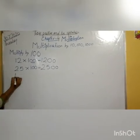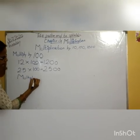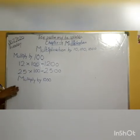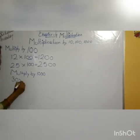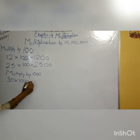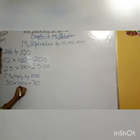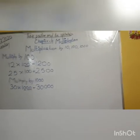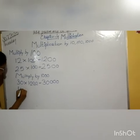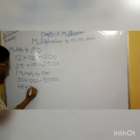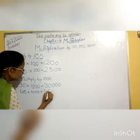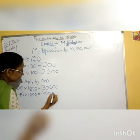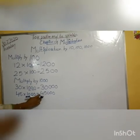Same in the case of multiply by 1000. If we multiply any digit by 1000, write the digit and put these three zeros to the extreme right of the number. For example, 30 multiplied by 1000 is 30000. Take one more digit: 45 multiply by 1000. First I am going to write 45, then add these three zeros to the extreme right of the number. That is 45000.